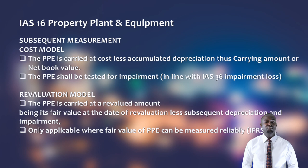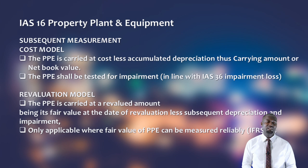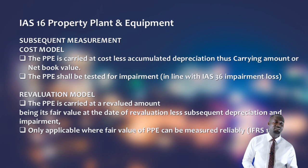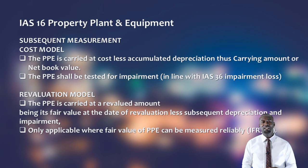When using the cost model, you must incorporate the principles of impairment. Impairment is a test carried out on an asset to determine whether the carrying amount is higher than the amount recoverable from it. There will be times when the net book value is higher than what you can recover either by sale or continued use. Guidance for this is provided under IAS 36, a separate standard dealing with impairment. You cannot use the cost model without understanding and applying the principles of impairment loss.